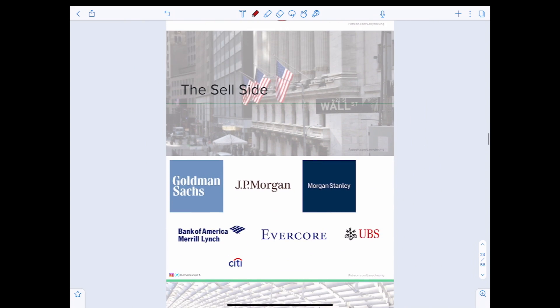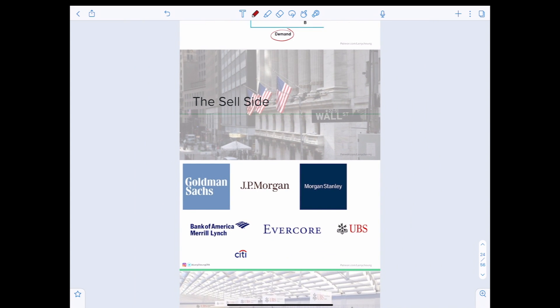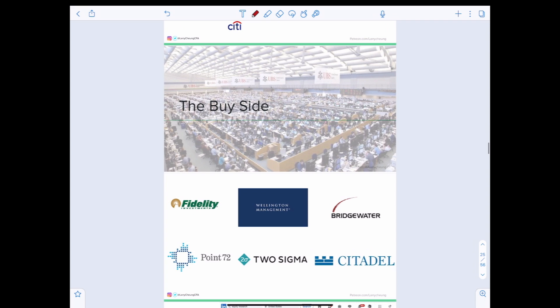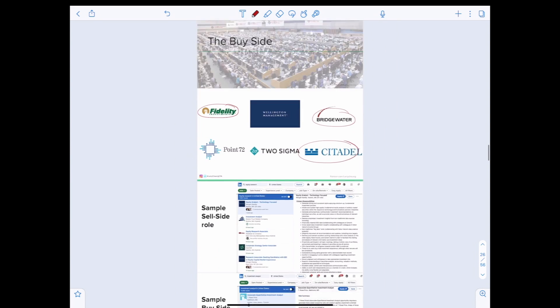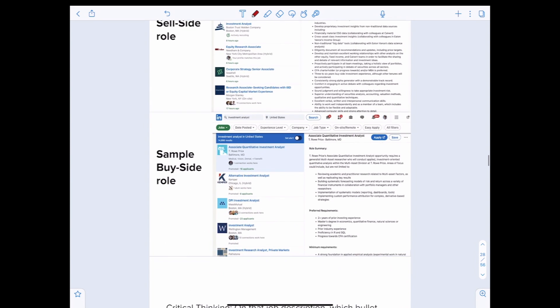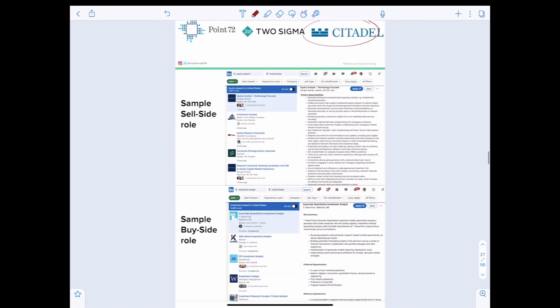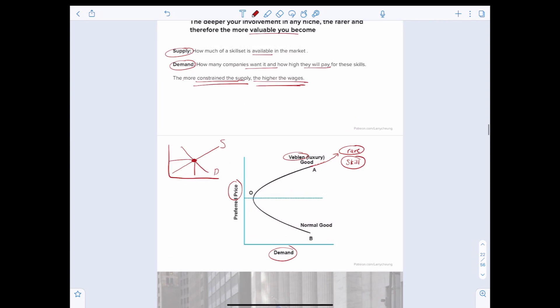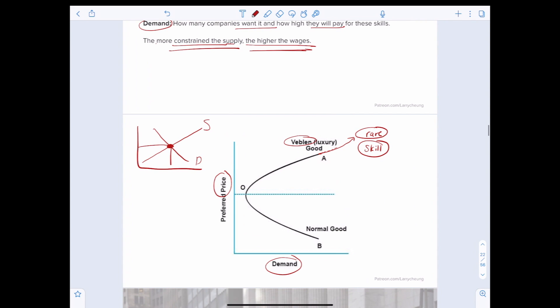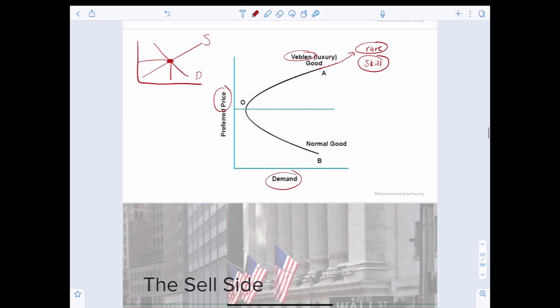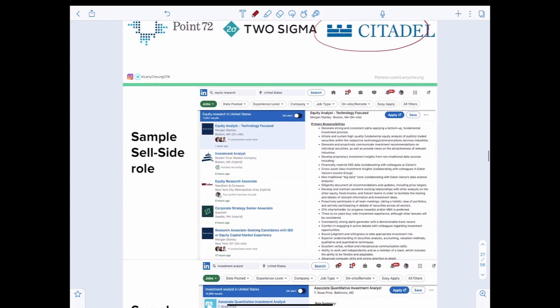Now let's talk about the sell side, which includes the famous investment banks that you see on this page, from Goldman, JPM, all the way down to Citi. And then the buy side, the famous mutual fund king Fidelity, and famous hedge funds like Bridgewater and Citadel. Let's talk about the job descriptions on LinkedIn on a sell side role, the buy side role, and then we'll apply this concept of a Veblen good to help you get the maximum chance to get an interview at these companies.